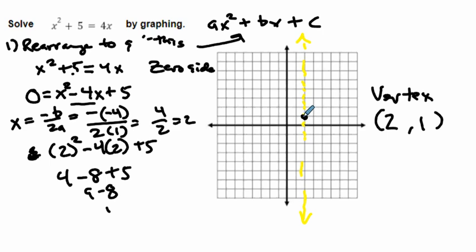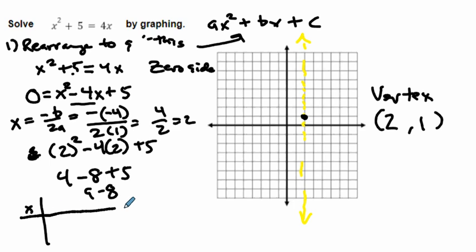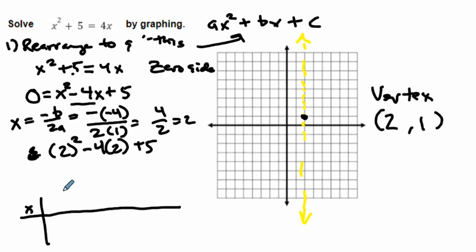So I go over to 2 and up to 1 and plot that point. We have x squared minus 4x plus 5 — this parabola is opening upward. If you're having some red flags right now, you're not wrong, but follow along and it will make sense. Let's plot some points. I'll make my table with x squared minus 4x plus 5.